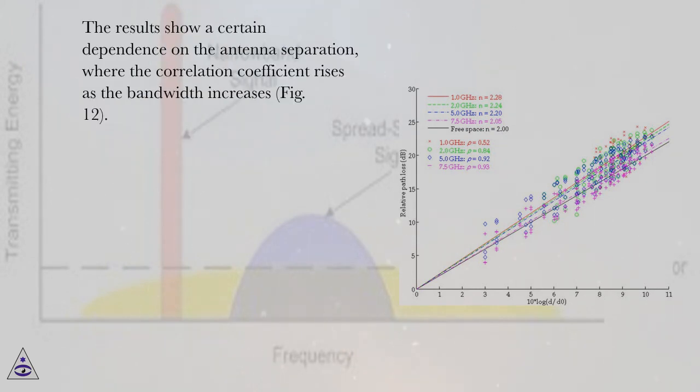The results show a certain dependence on the antenna separation, where the correlation coefficient rises as the bandwidth increases, Figure 12.